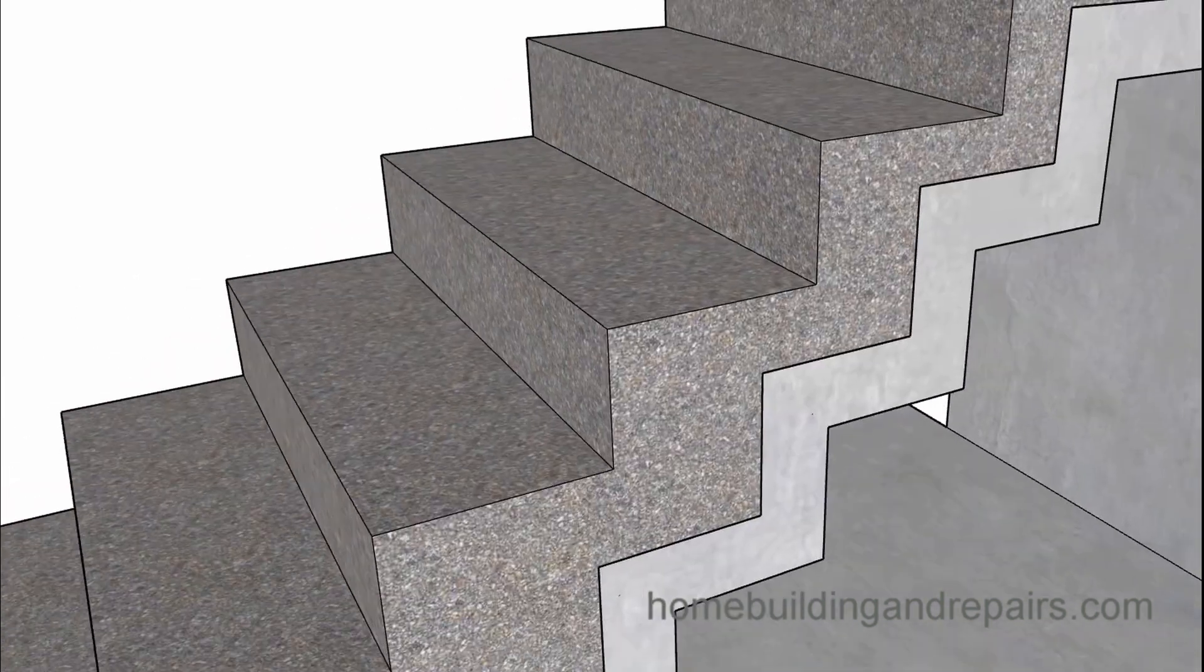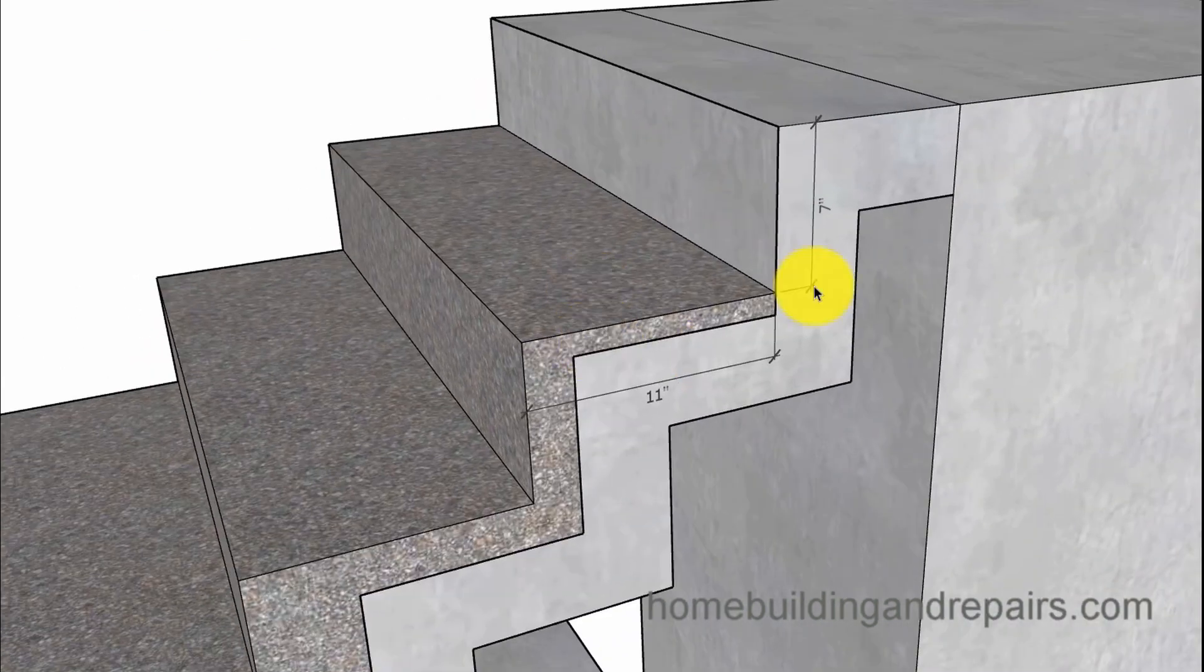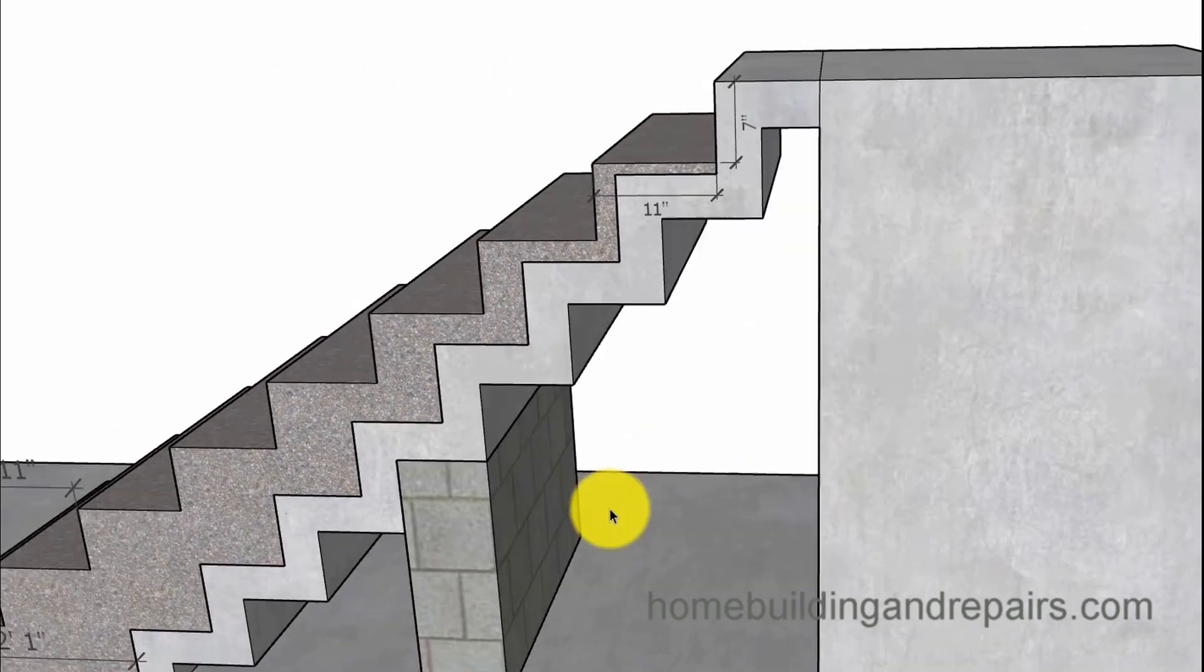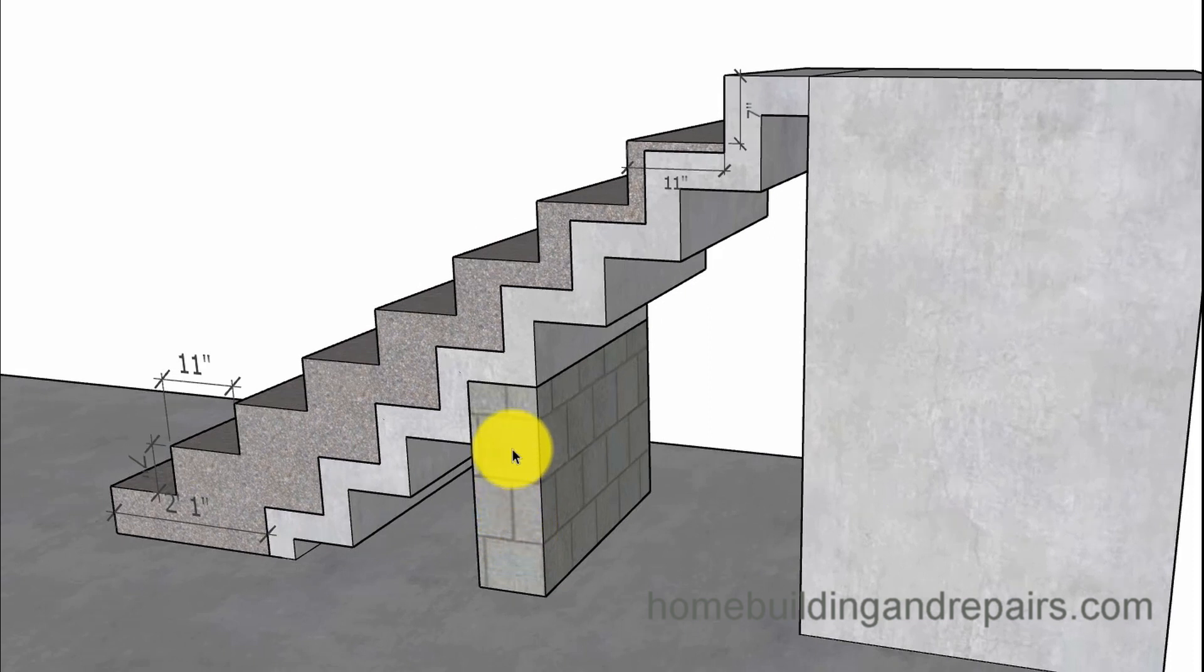Once we start getting below two inches, there's a good chance this stuff's going to crack. You might want to use some type of epoxy in this area where it's going over the other stairway, and you might also need to build some type of supporting wall because of the additional weight you're putting onto the existing stairway.